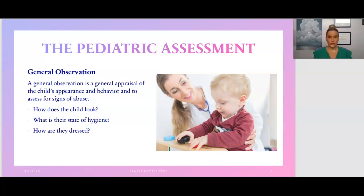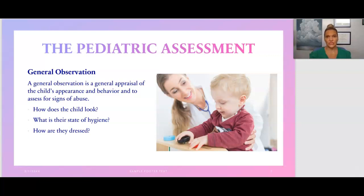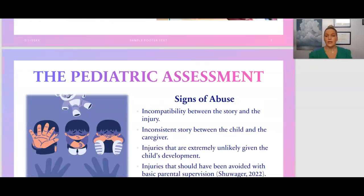The pediatric assessment starts with a general observation of the child or infant — a general appraisal of their appearance and behavior, and looking for any signs of abuse. How does the child look? Are they in clean or dirty clothes? What is their state of hygiene? Is their hair brushed? Are they clean? And is their clothing appropriate for the weather — for example, do they have a coat and gloves if it's cold?